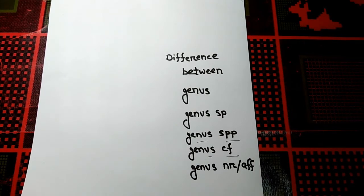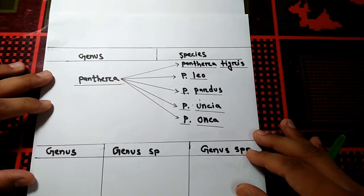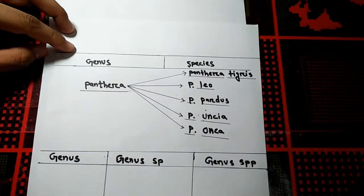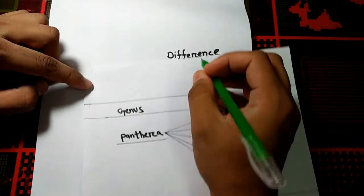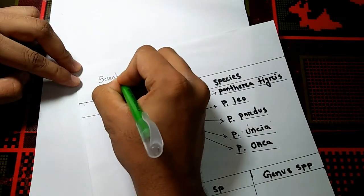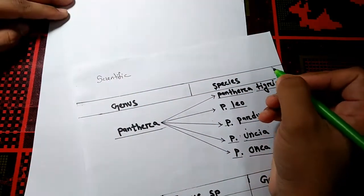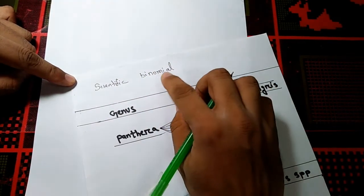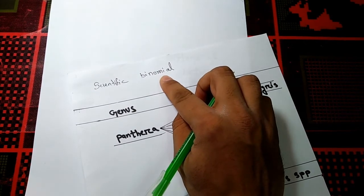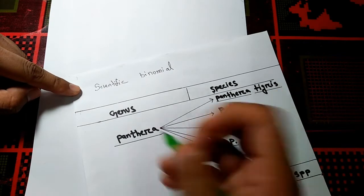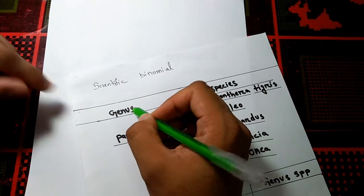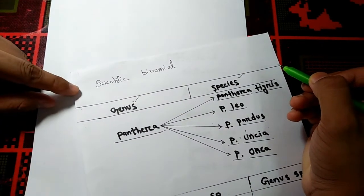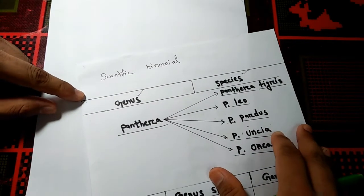If any author wants to write any scientific name, he or she has to write it in a binomial manner. What is the binomial manner? We have to write a scientific name in two parts: the first part is the genus and the second part is the species.